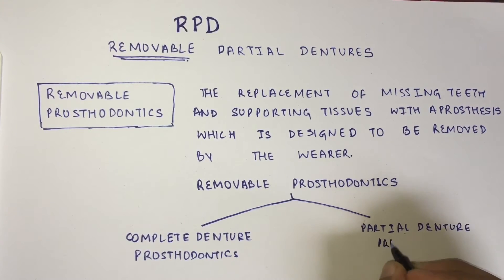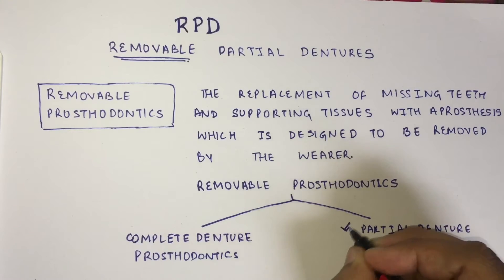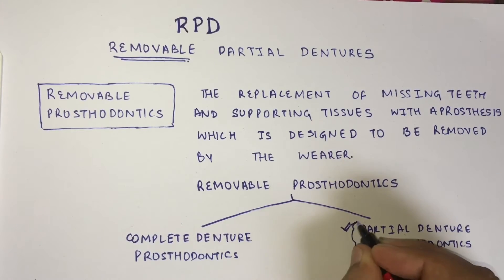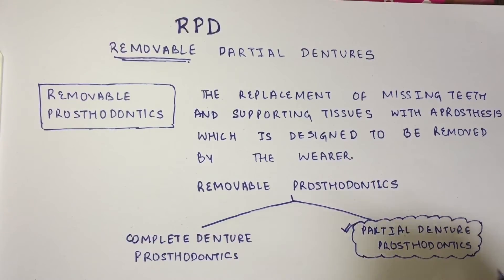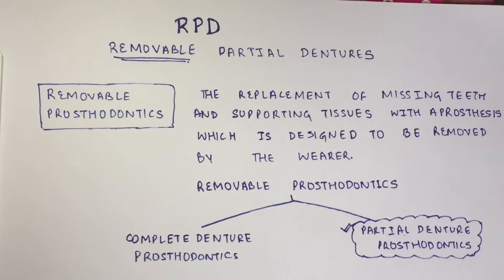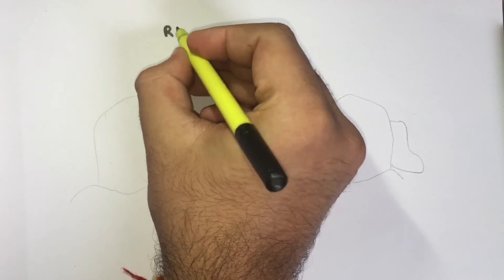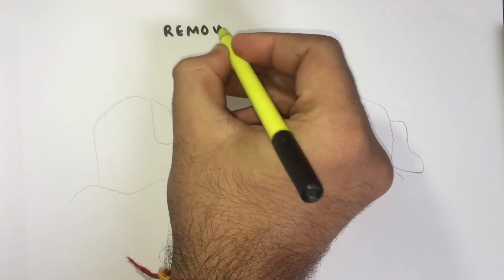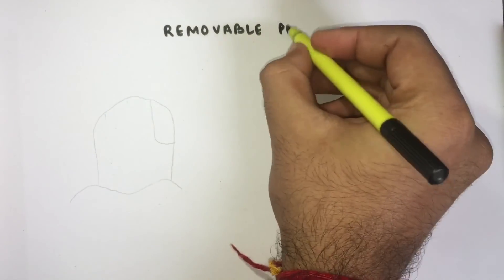Removable denture prosthodontics can be broadly classified as removable complete denture prosthodontics and removable partial denture prosthodontics. We will be dealing with removable partial denture prosthodontics, which are further divided into two types.